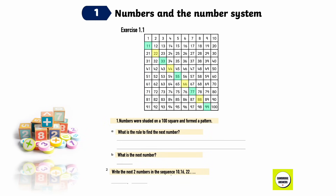Exercise 1.1. Hassan shaded in grey these numbers on a hundred square: 11, 22, 33, 44, 55, 66, 77, 88, and 99. The numbers form a pattern. What is Hassan's rule for finding the next number? The rule is to add 11.